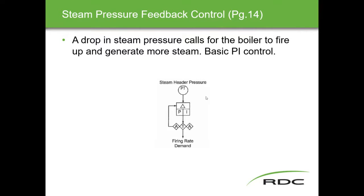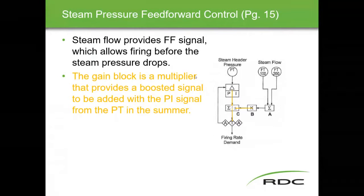Here's a SAMA diagram showing steam header pressure going into a pressure controller, which sends out a signal that increases or decreases our firing rate demand — providing more heat and thereby more pressure, or less heat for less pressure. A drop in steam pressure calls for more heat, increasing the firing command, making more steam and bringing the pressure back up to set point. That's steam pressure feedback.